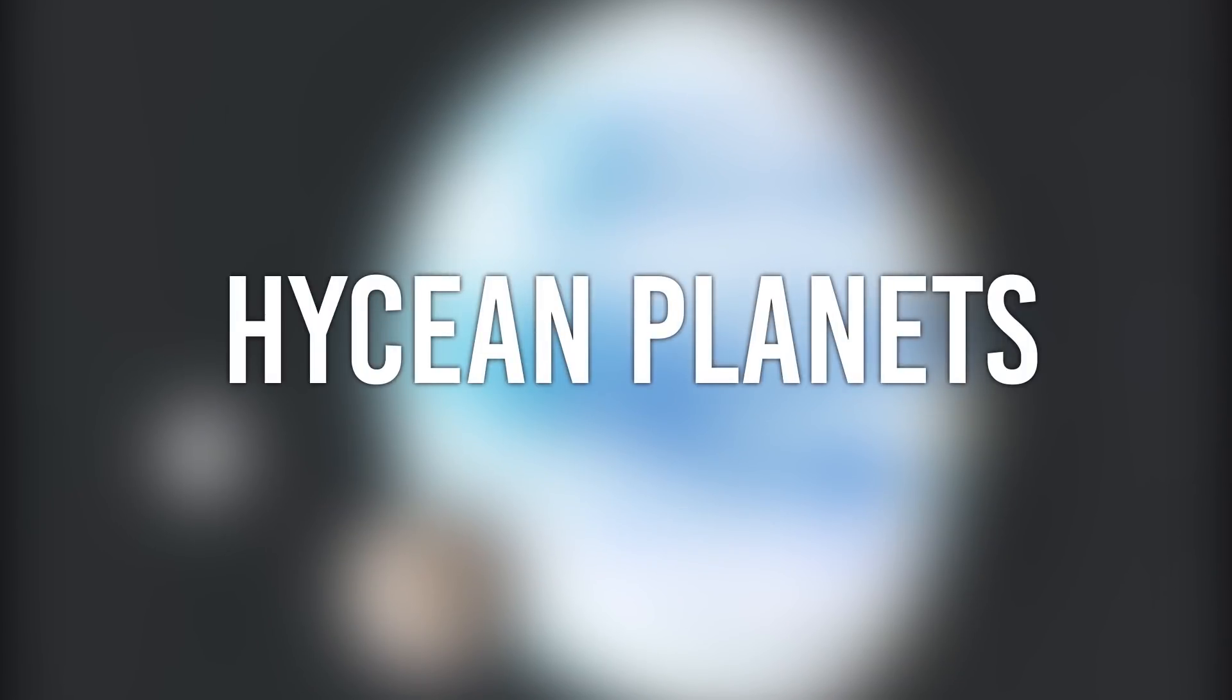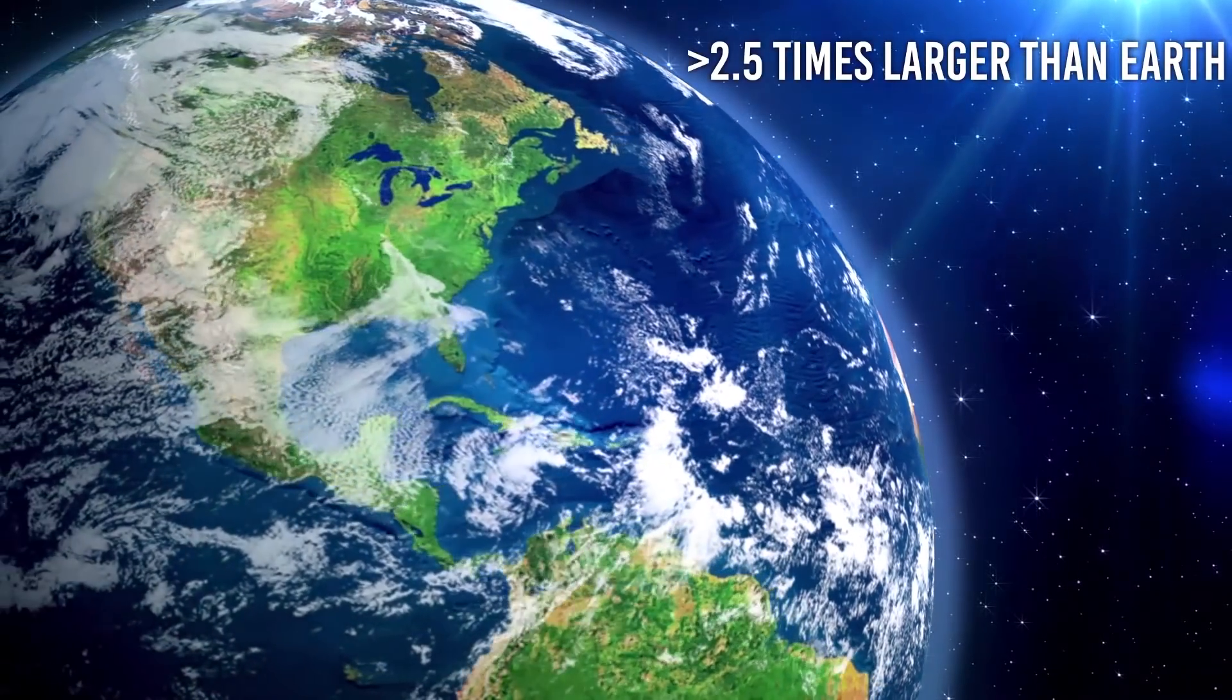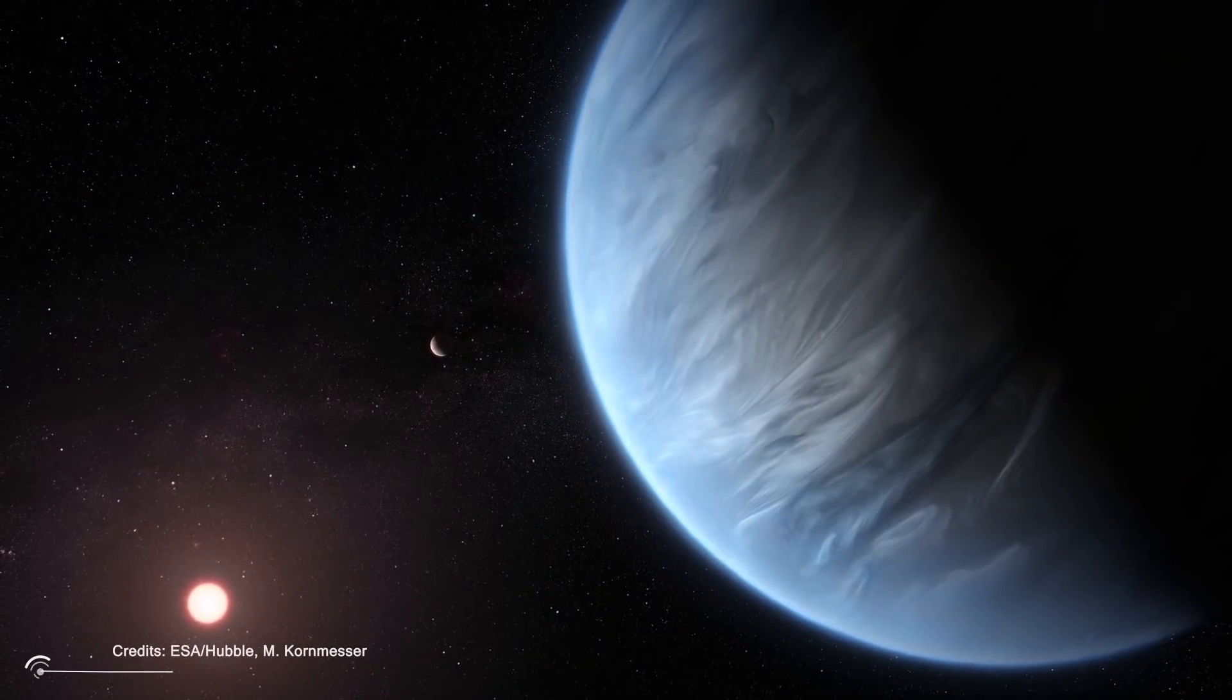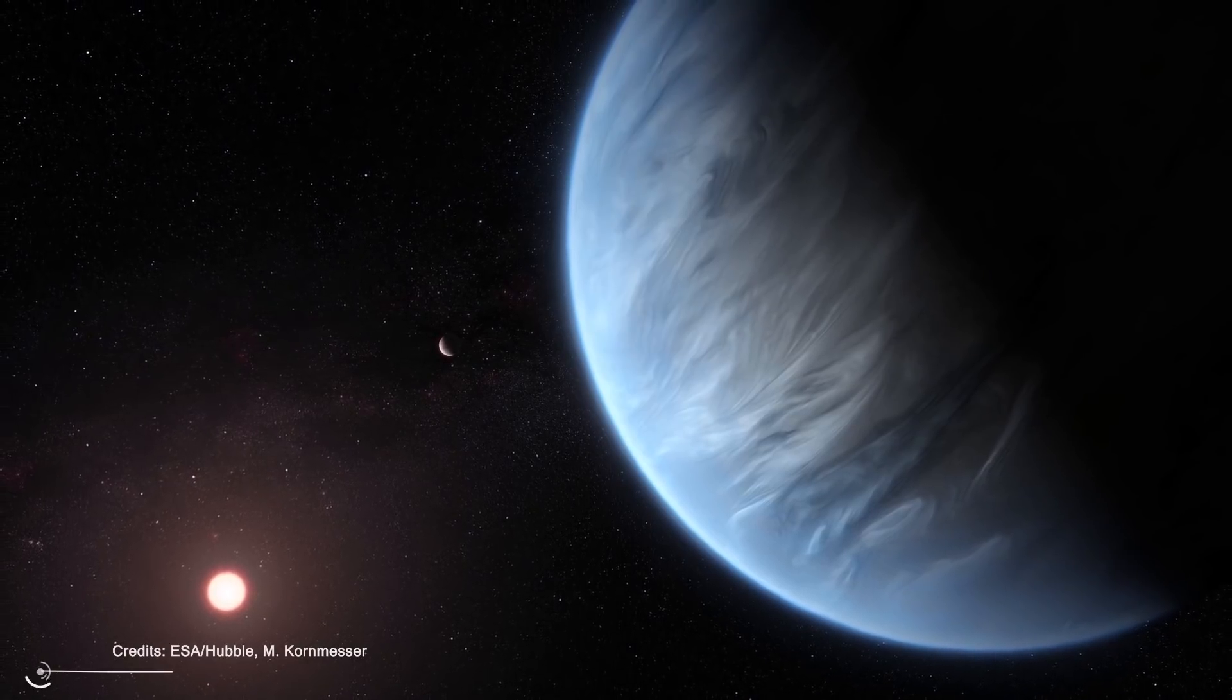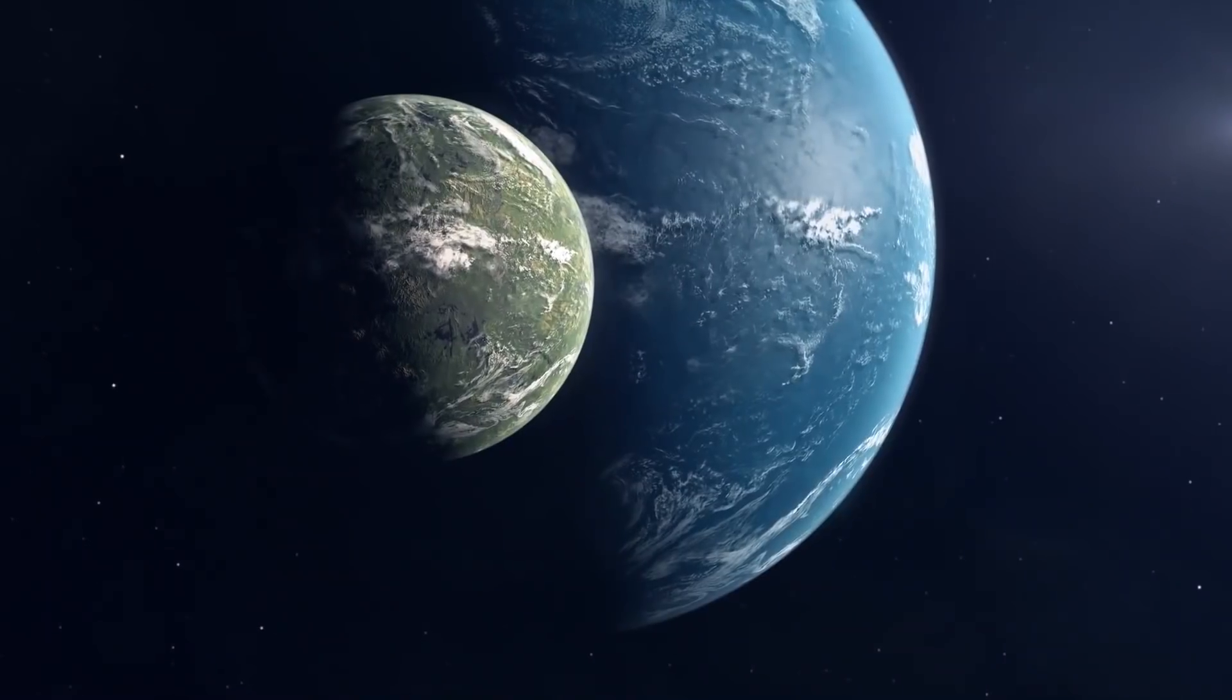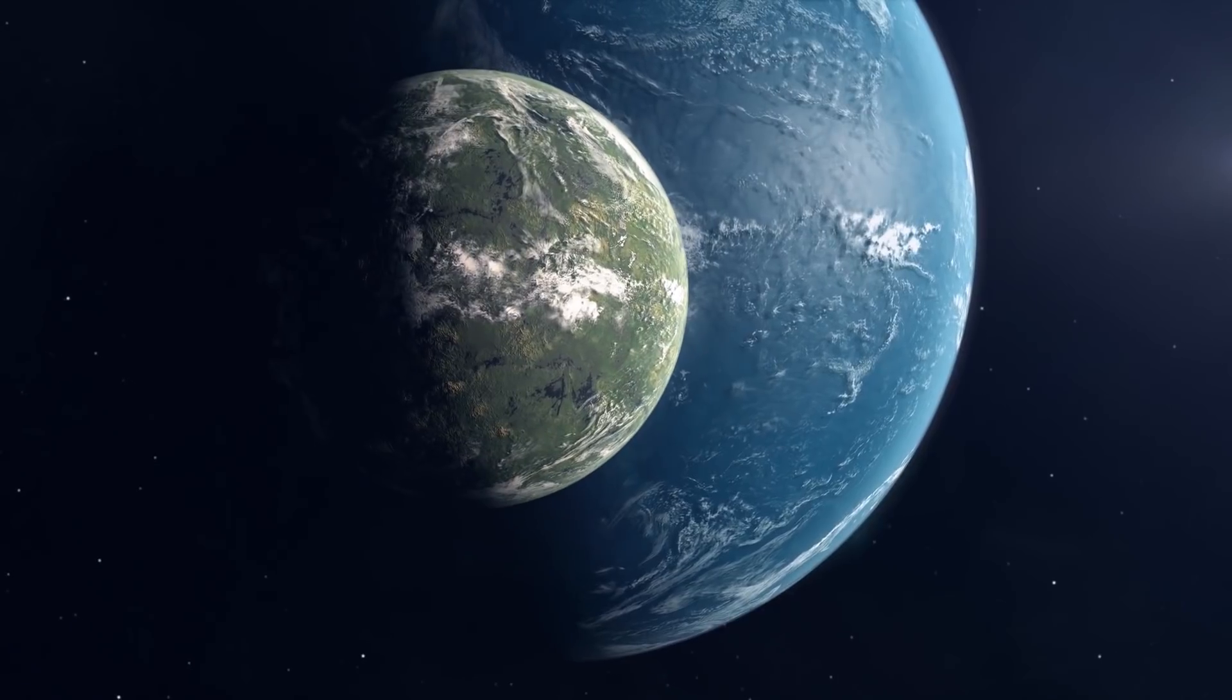Hycian planets. The term Hycian arises from the combination of the words hydrogen and ocean. Hycian planets are up to 2.5 times larger than Earth and boast vast oceans of liquid water beneath hydrogen-rich atmospheres. Hycian worlds are similar in size to super-Earths and mini-Neptunes, two of the most common types of exoplanets in the galaxy. Some orbit so close to their stars that they experience a phenomenon called tidal coupling.